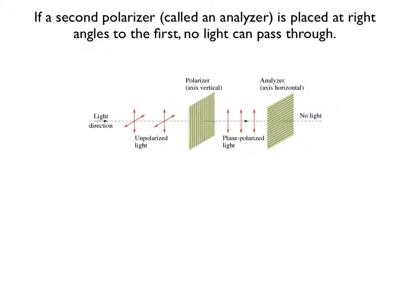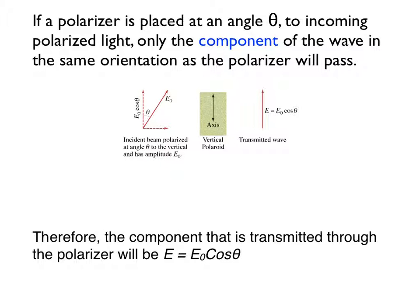If a second polarizer, sometimes referred to as an analyzer, is placed at right angles to the first, no light can pass through. Can you see why? If a polarizer is placed or rotated at an angle to incoming polarized light, only the component of the wave that has the same orientation as the polarizer will pass. You might want to pause this video, study the diagram, and be sure you understand why this is.